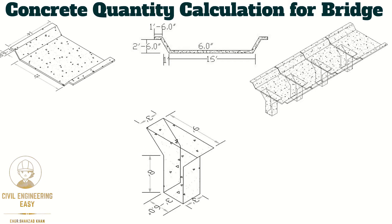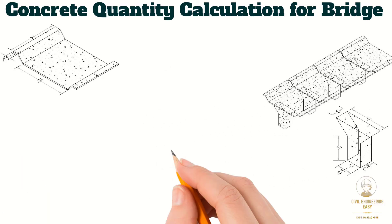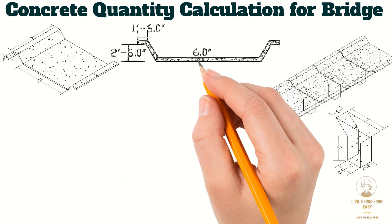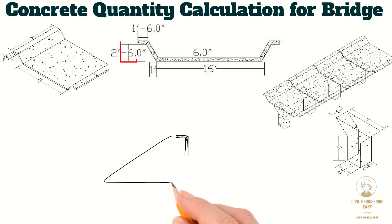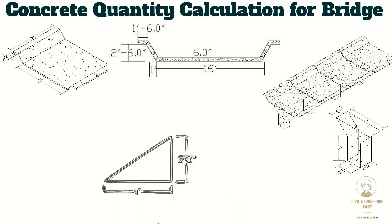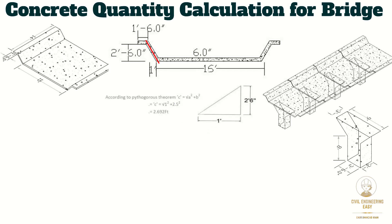Let's start the calculation. We need to find out the total cross sectional length of the slab, for which we need to find out the length of the slope portion. Consider a right-angled triangle where the base is 1 foot and the height is 2.5 feet. The base 1 foot represents the projection of the slab and 2.5 feet represents the depth of the slope portion. By applying the Pythagorean theorem, the slope length equals the square root of (1² + 2.5²), which gives 2.692 feet.